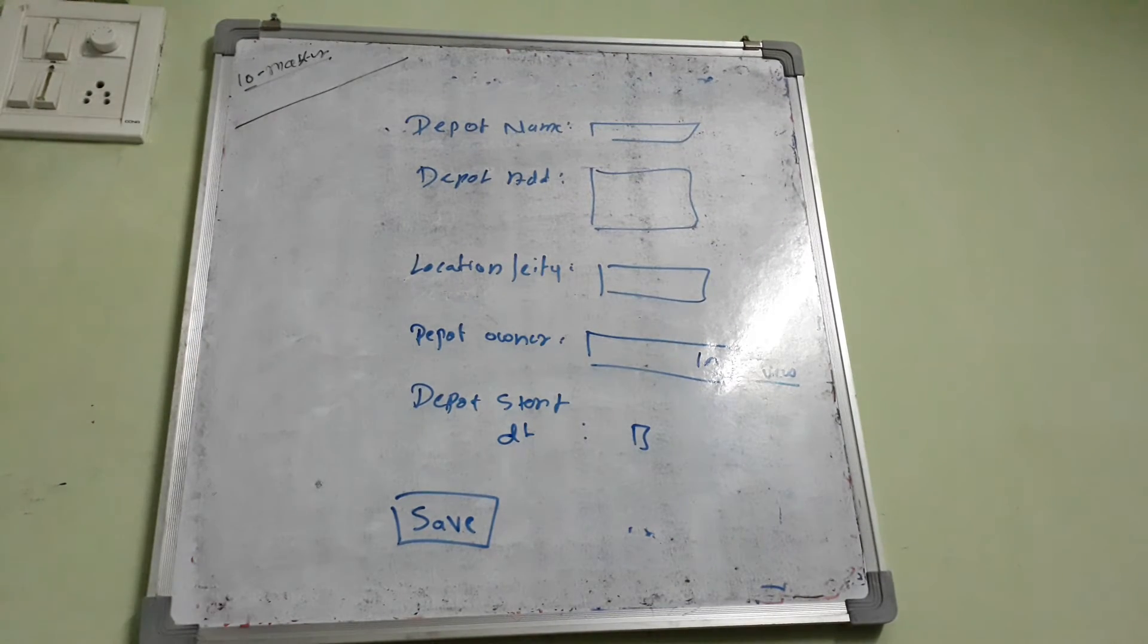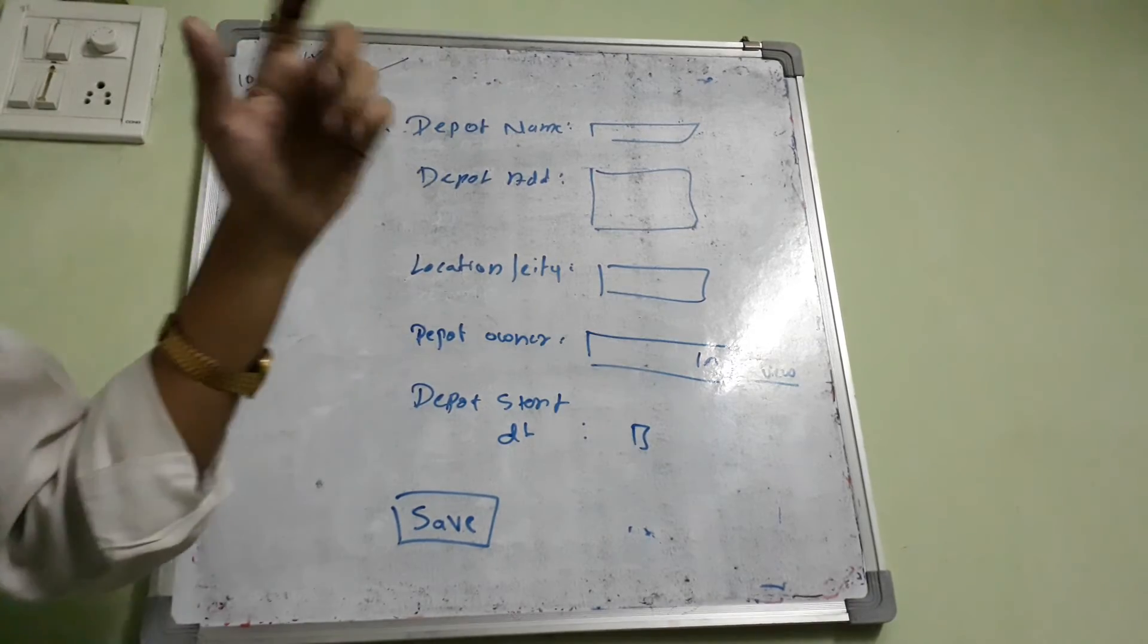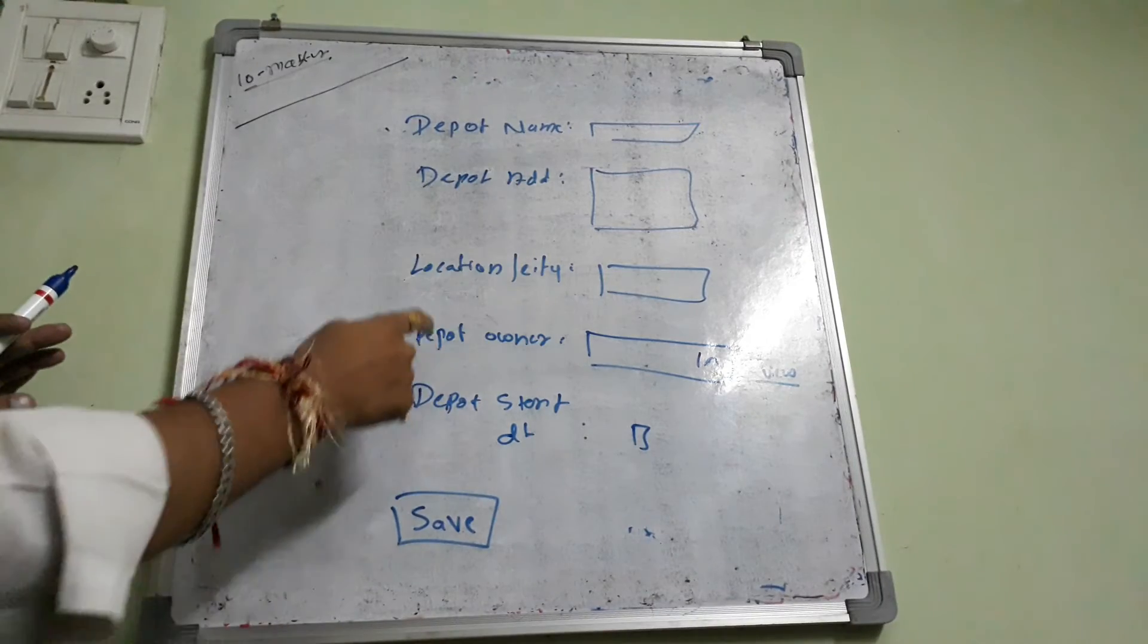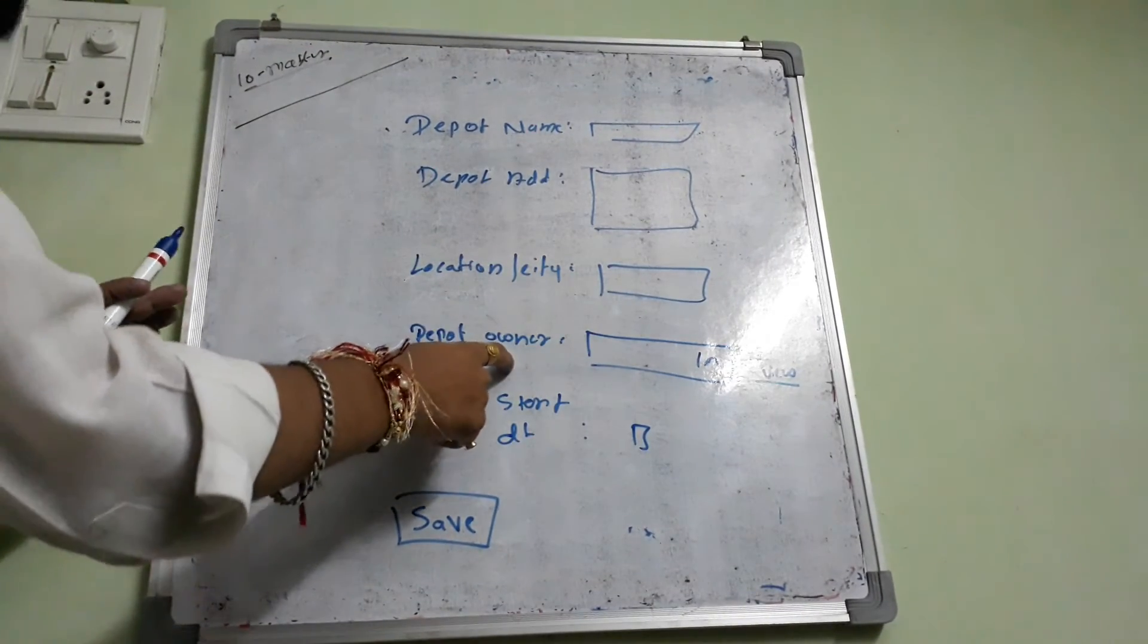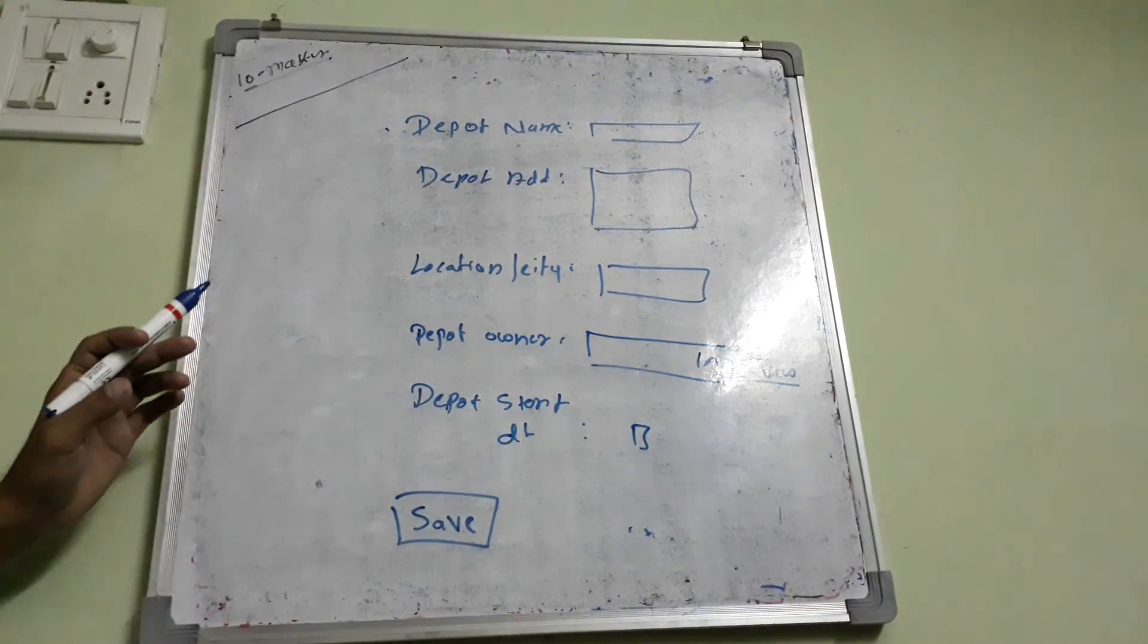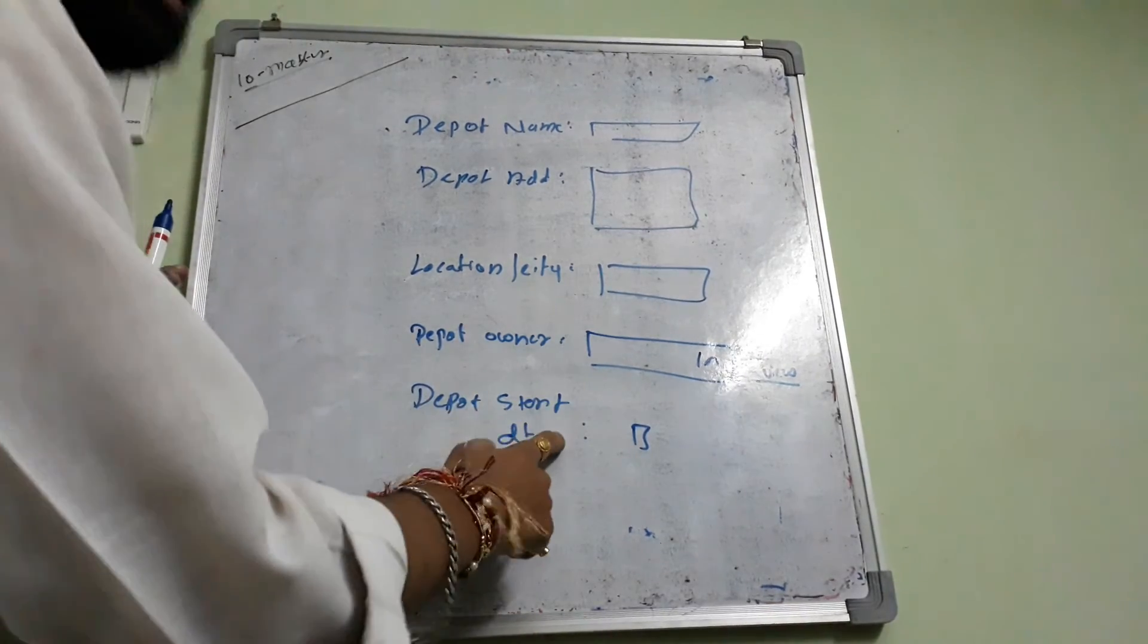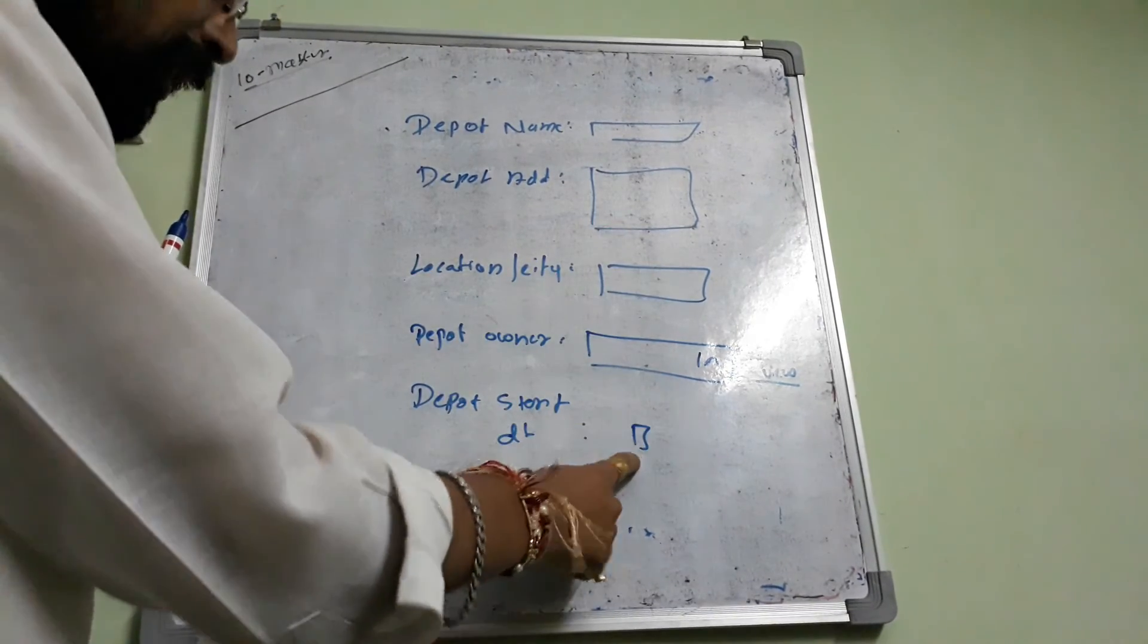That's it and save button inside. Insert fire and depot table is filled: depot address and location city and depot owner integer. Depot owner, depot database value and save. That's it, save button and fire.